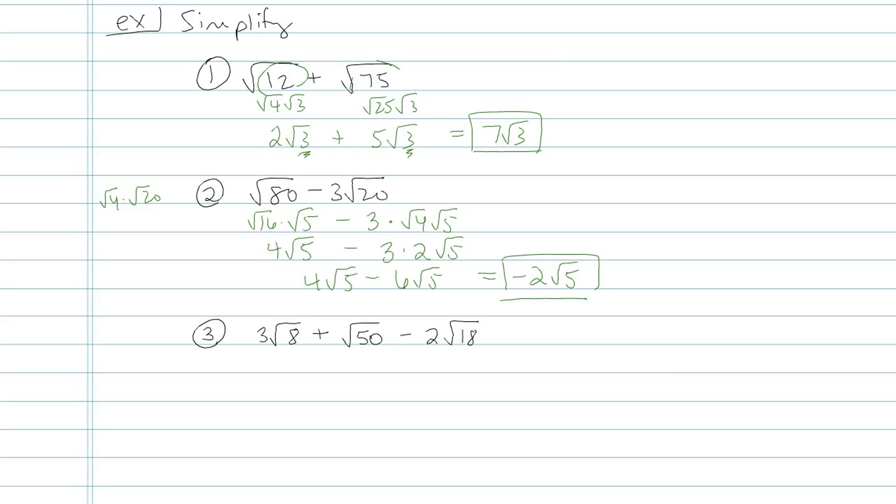Let's try one last one. This one has 3 terms, so we'll see if all three of them can be combined. Maybe only two of them can. We'll see. 3 root 8. Okay, so instead of root 8, I'm going to make it root 4 times root 2. That's the same thing as 3 times 2 root 2 or 6 root 2.